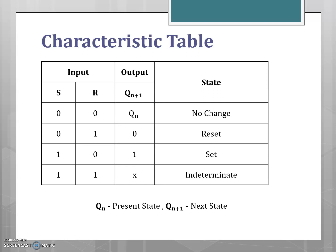The input and output values for the SR latch are summarized in a characteristic table, which reflects the properties of the latch. For S=0 and R=0, there is no change — Qn+1 is the same as Qn, the present state. For S=0 and R=1, the next state is 0, representing reset condition. With S=1 and R=0, the next state equals 1, representing set condition. With S=1 and R=1, it is a prohibited state and the next state is indeterminate.